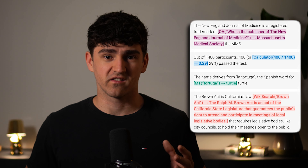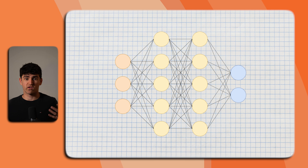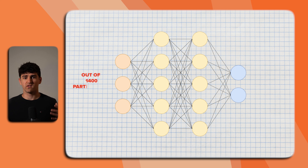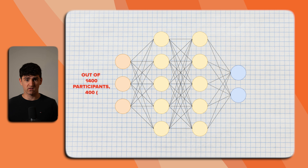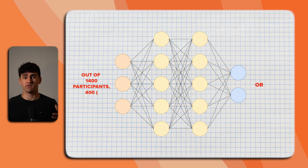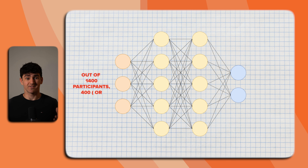With GPT-style transformers, we perform next token prediction given an existing context. For instance, when looking at the second example, the input context might be 'out of 1400 participants, 400, opening bracket,' and the model would simply predict the next token or word. We can predict the next token in an autoregressive fashion — that means we include the last output, in this case 'OR,' to form the new input context. The model now autonomously decides to call the API.